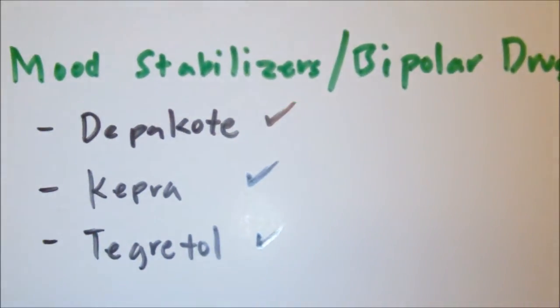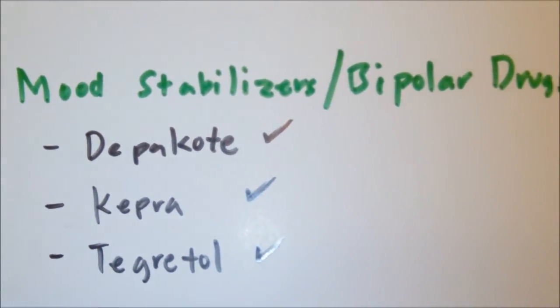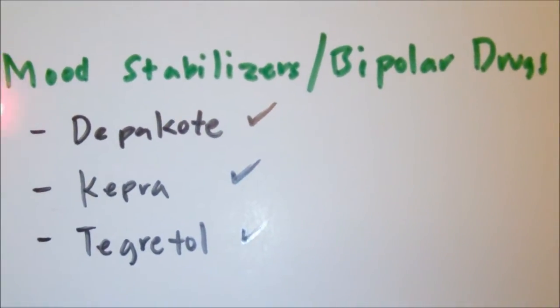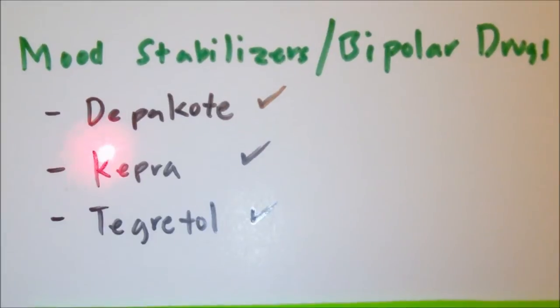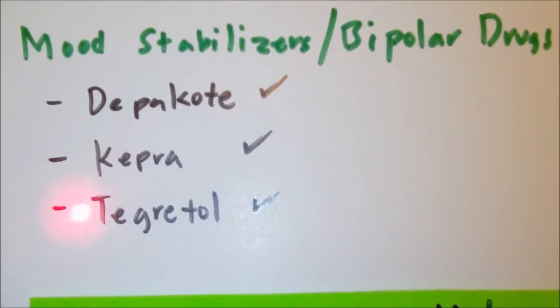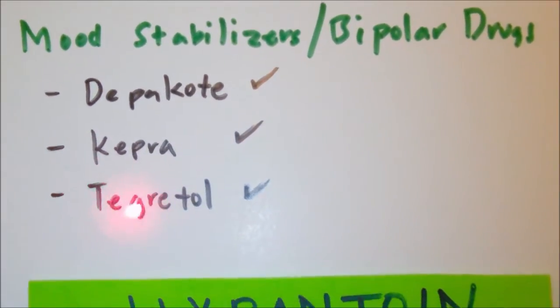These anticonvulsant/bipolar NCLEX drugs would include Depakote, Keppra, and Tegretol.